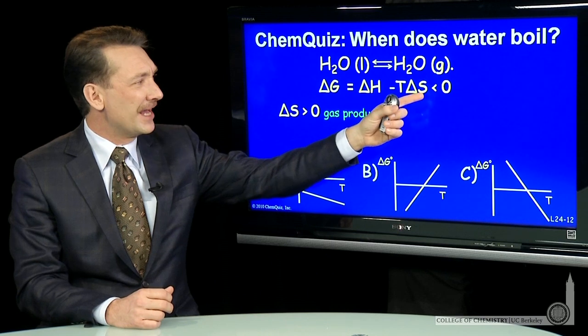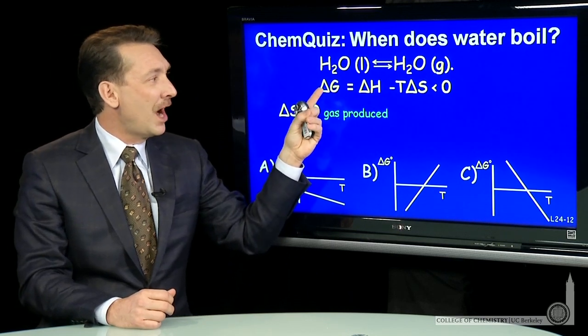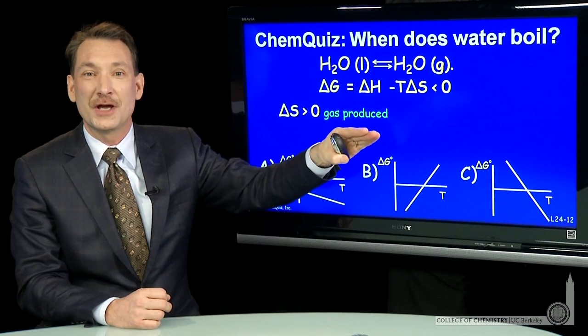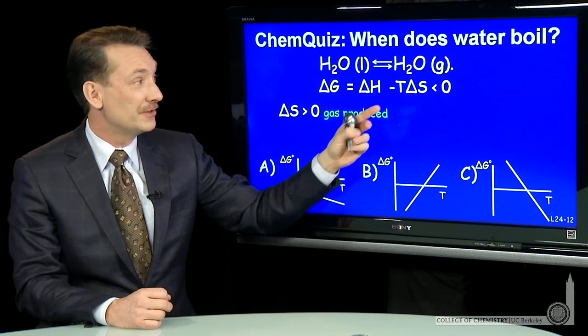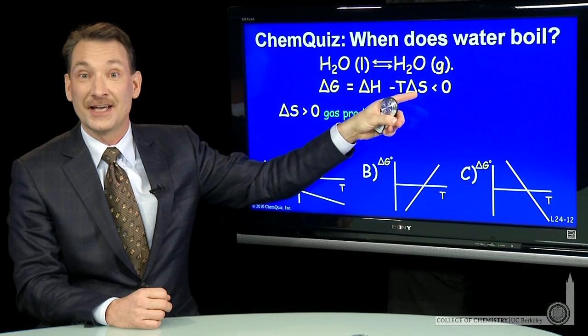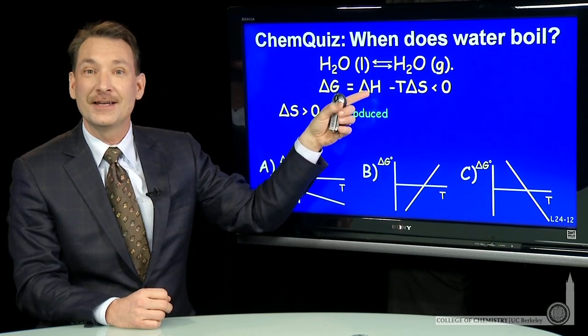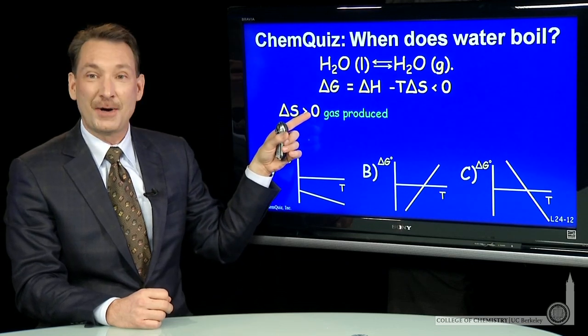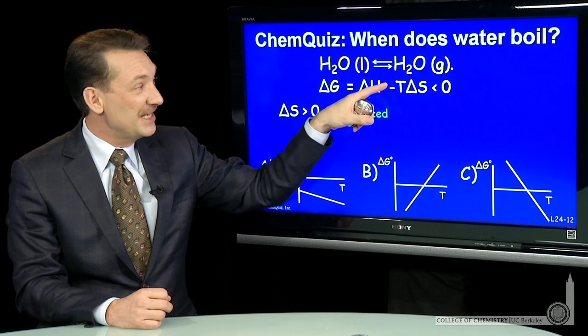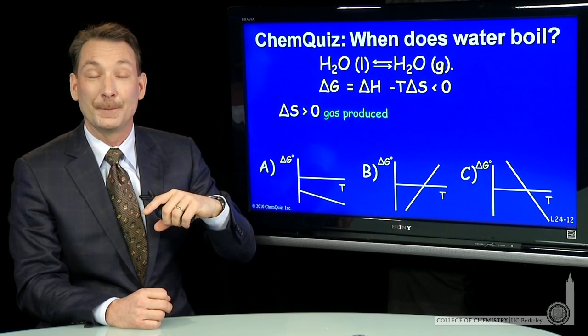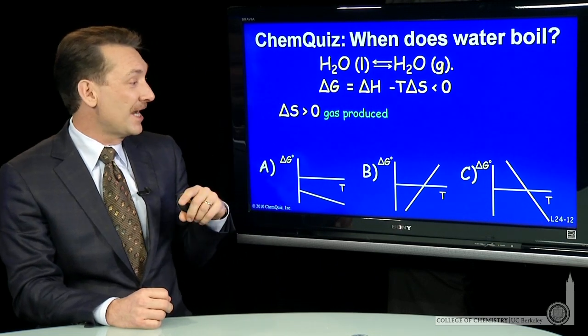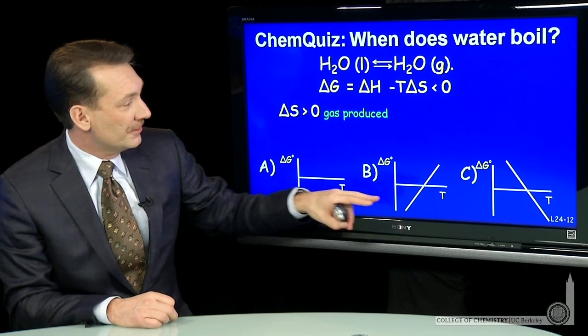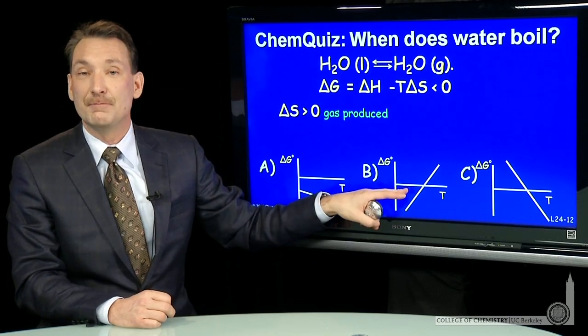If you look at this in terms of a line, this looks like y equals mx plus b, the standard situation for a straight line, has a slope determined by, in this case, delta S, and an intercept determined by delta H. So if delta S is positive, the slope of this system must be negative because there's a negative sign there. So this slope must be negative. We've got negative slope here, negative slope here. So that eliminates B.